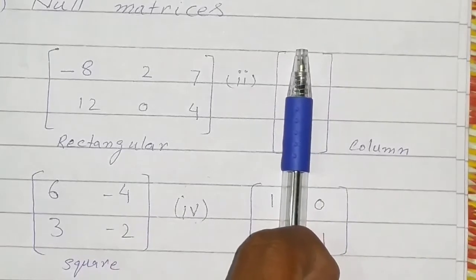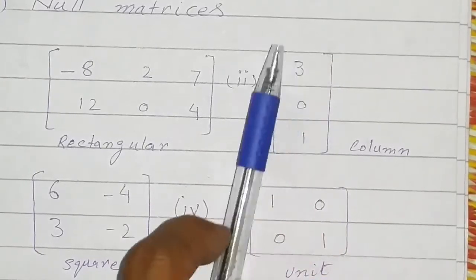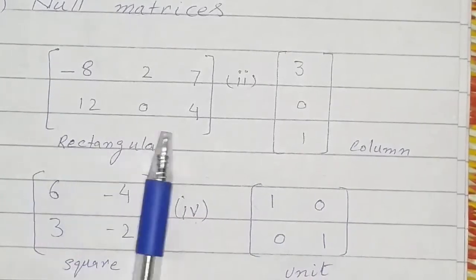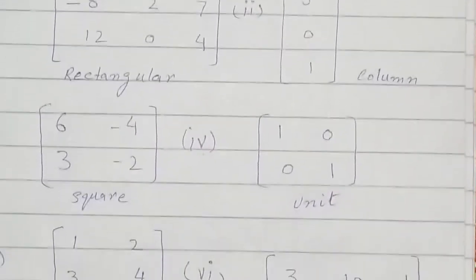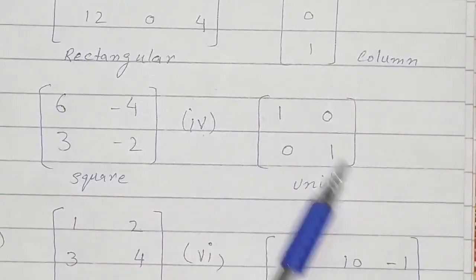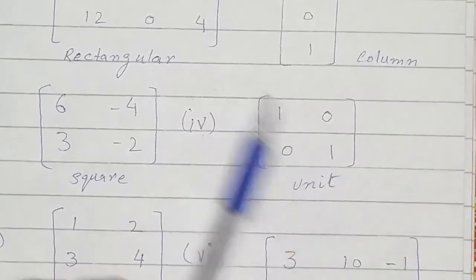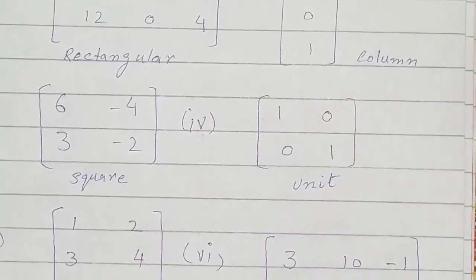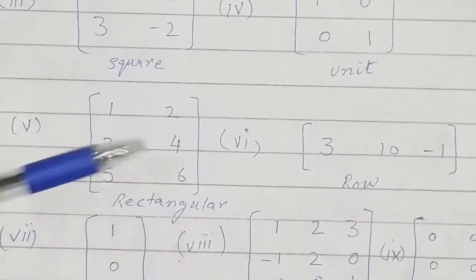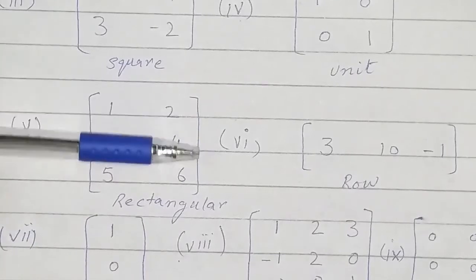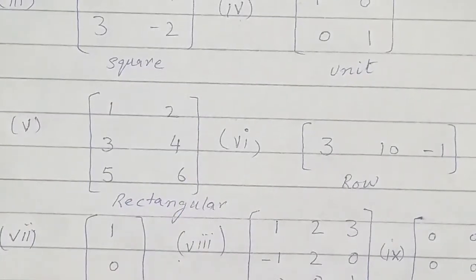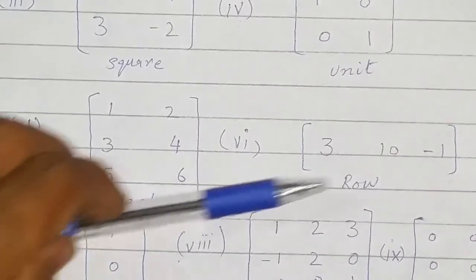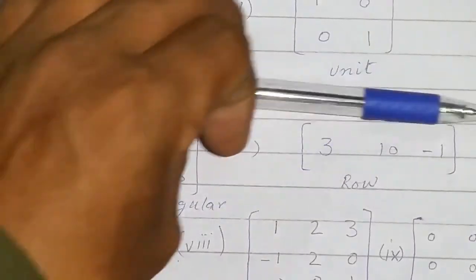Here there is only one column for this matrix, so it is a column matrix. Here there are two rows and two columns, so it is a square matrix. It has ones in the diagonal and all other elements are zero, so it is a unit matrix or identity matrix.